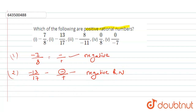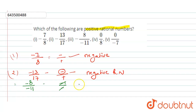The third rational number given to us is minus 8 upon minus 11. Here minus upon minus — the two negatives cancel out — so it becomes positive. This is a positive rational number.